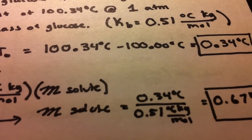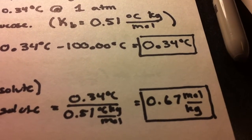So rearrange everything together. M solute would equal 0.67 moles per kilogram.